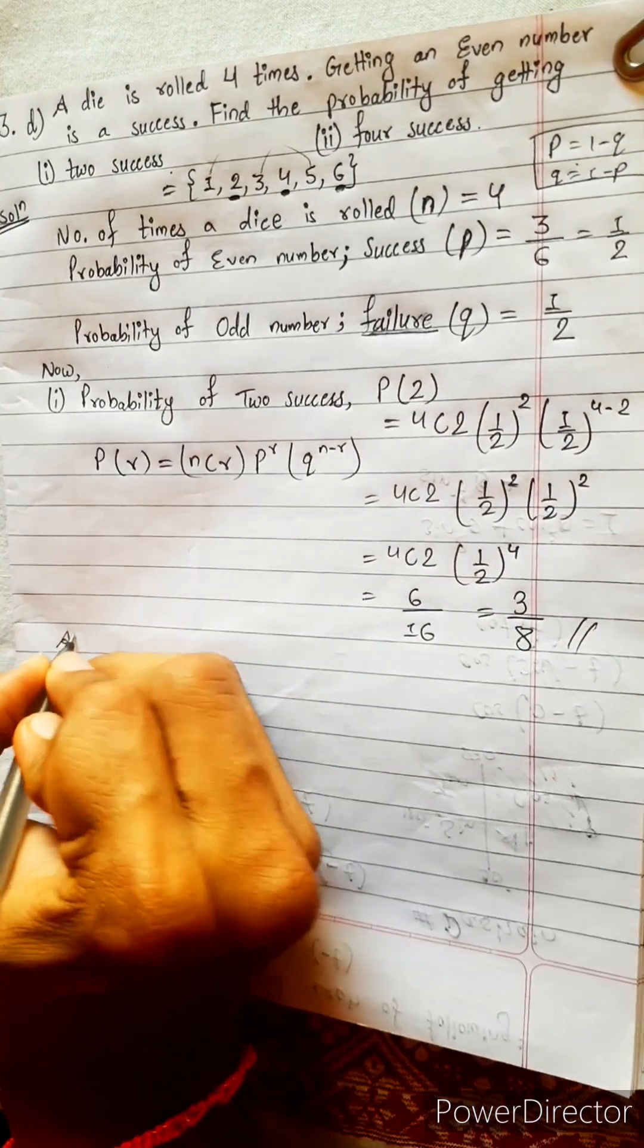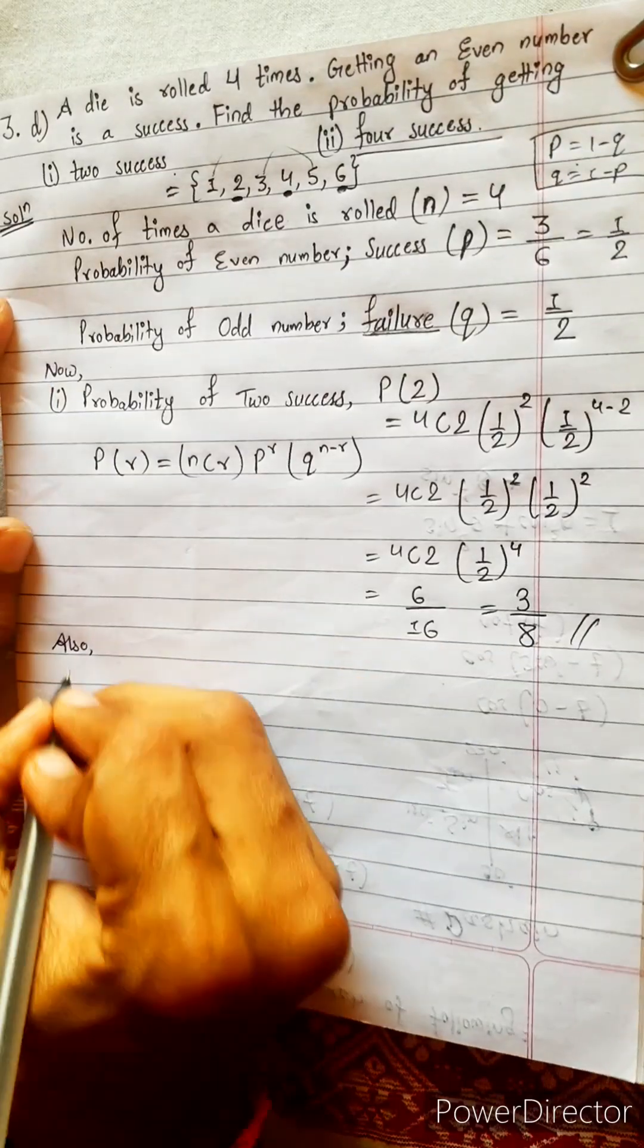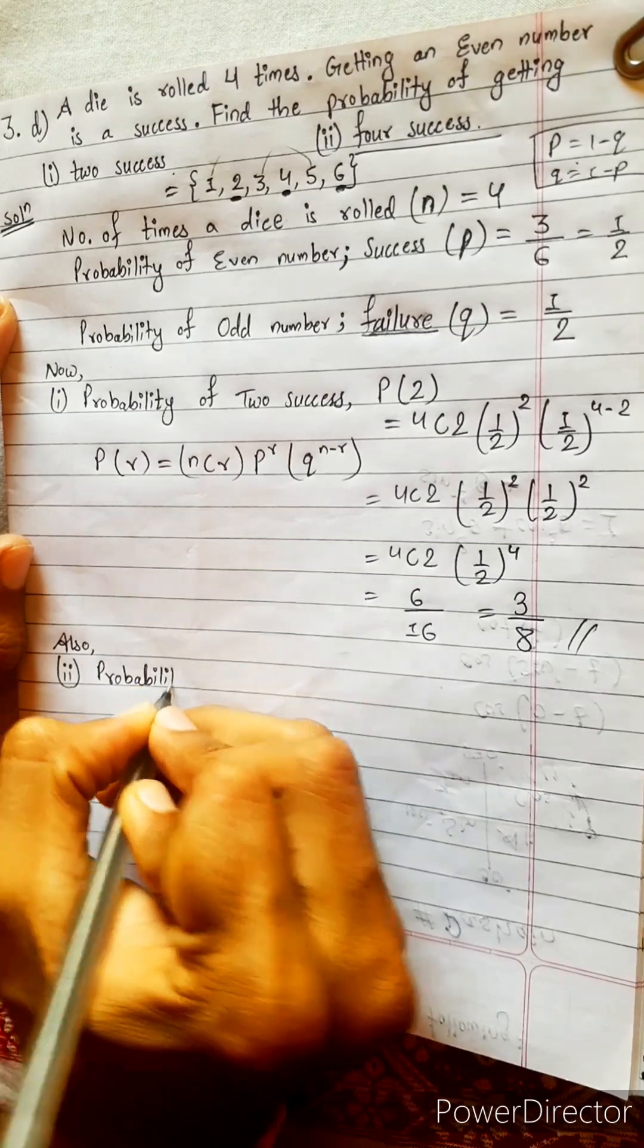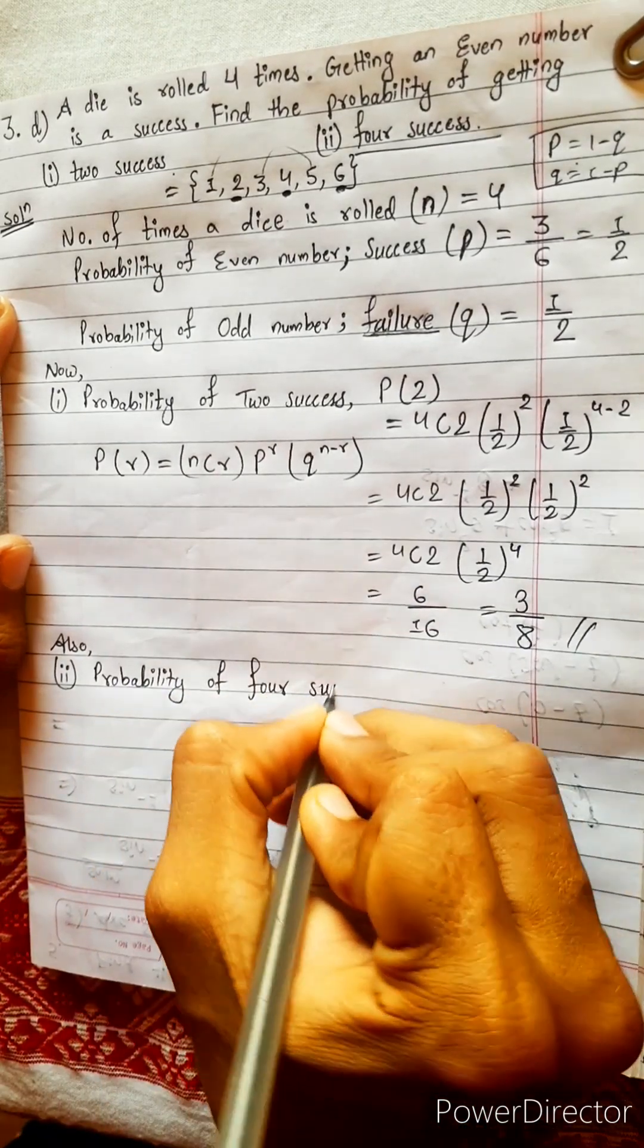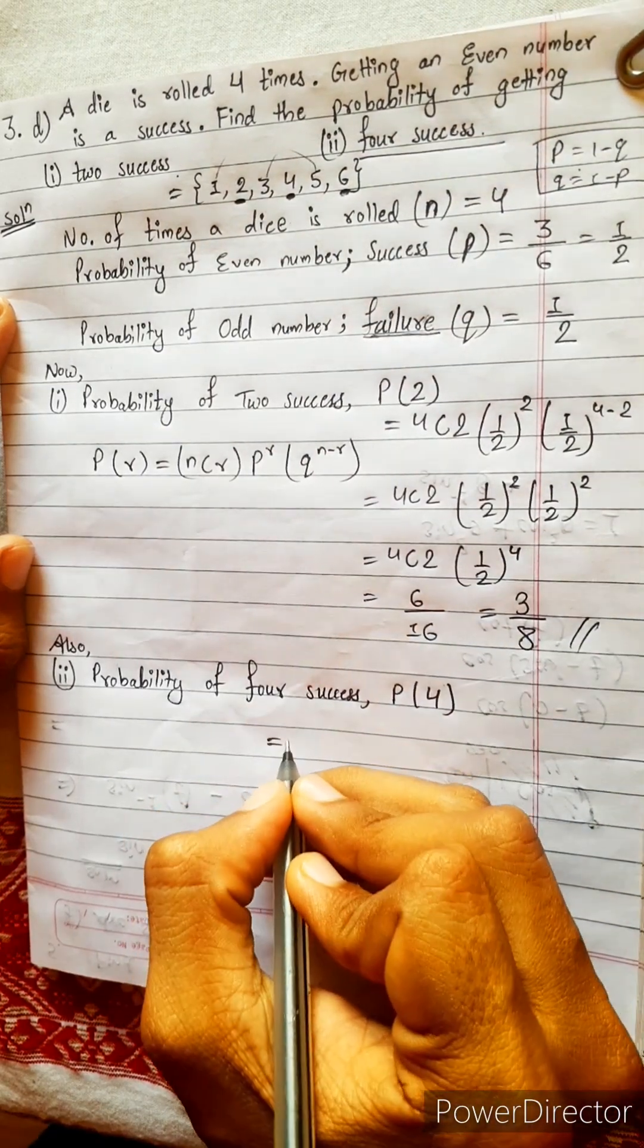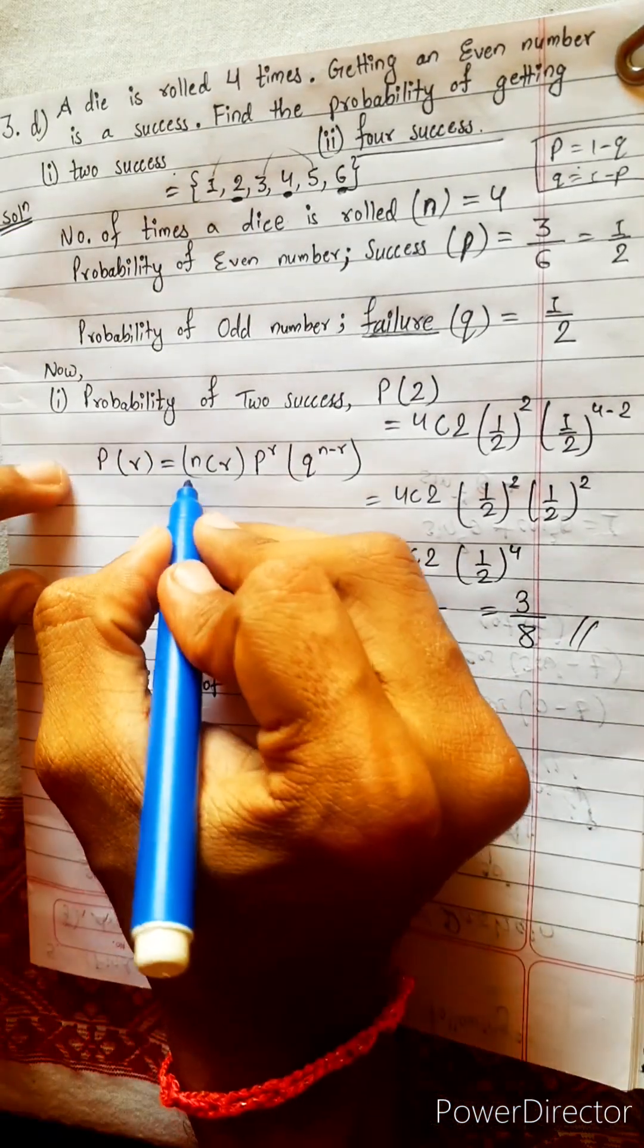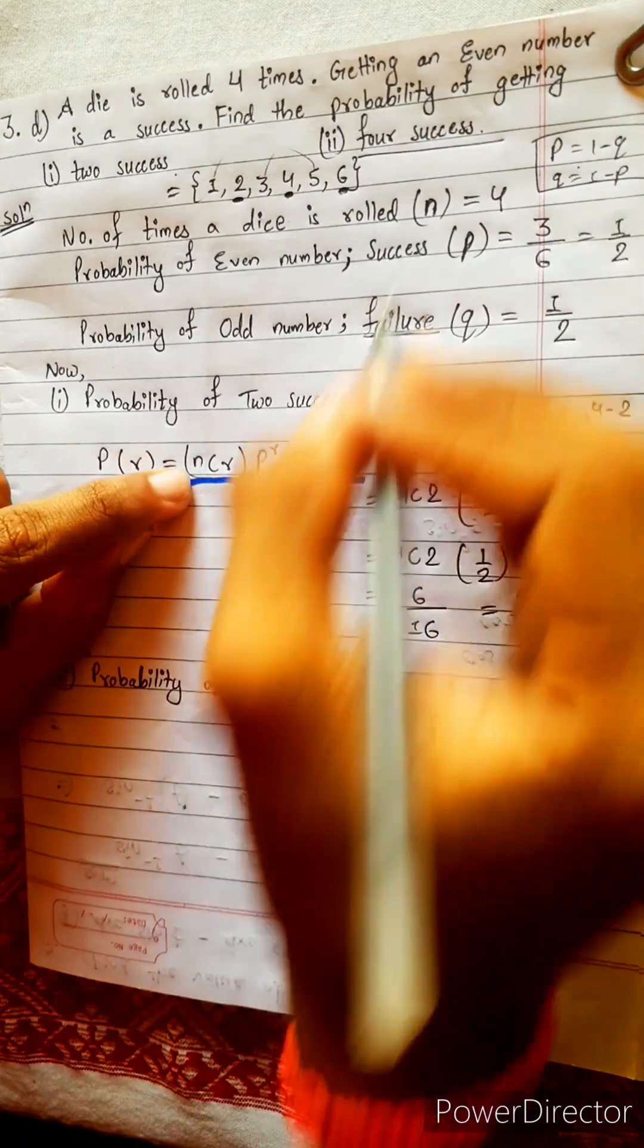Now, do two number. Four success. Two number, probability of getting four success. P(4). This is, use this same formula. Because this formula is our universal formula. It will work everywhere.